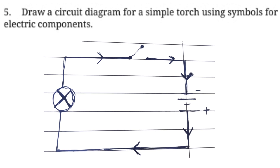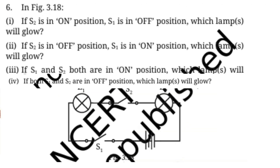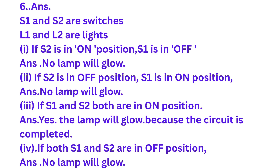Question number six: S1 and S2 are switches; L1 and L2 are lamps. If S2 is in on position and S1 is in off position, no lamp will glow. If S1 is in on position and S2 is in off position, no lamp will glow. If both S1 and S2 are in on position, the lamp will glow because the circuit is completed.